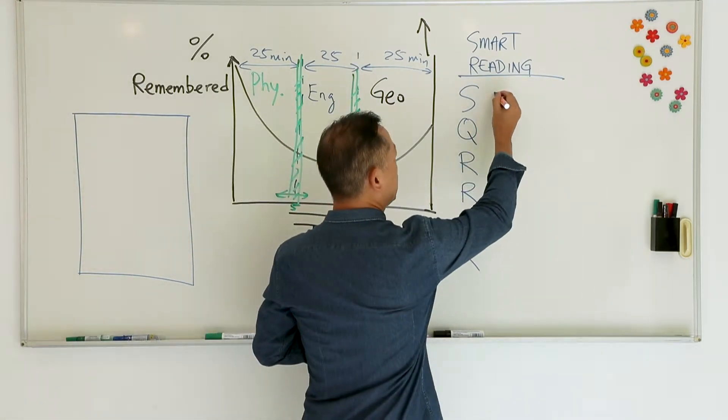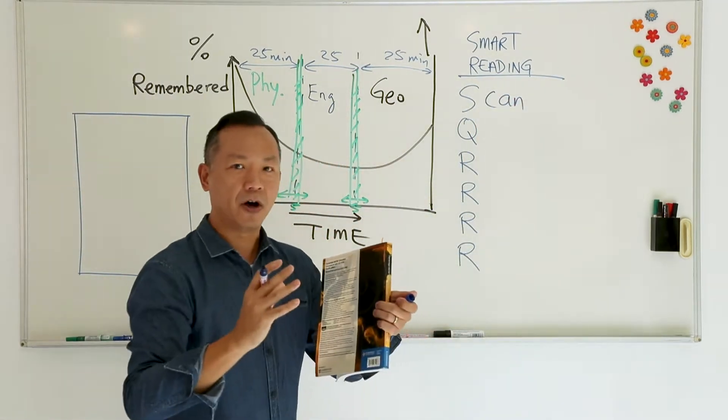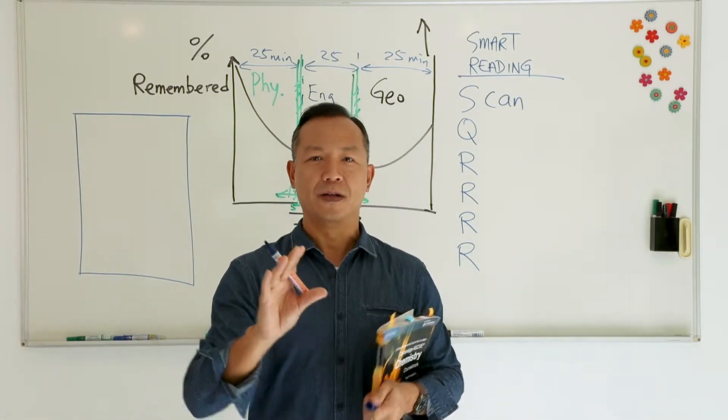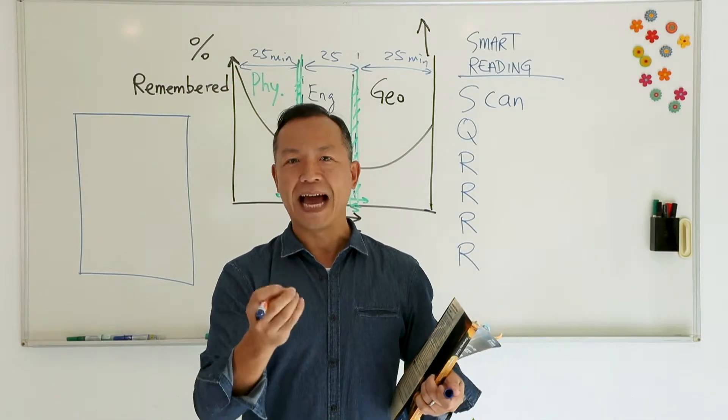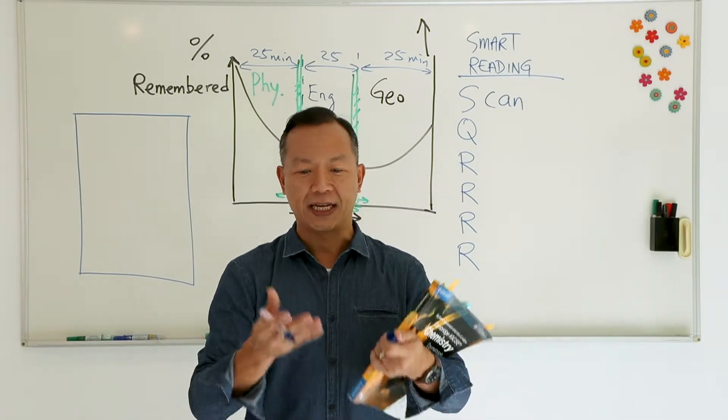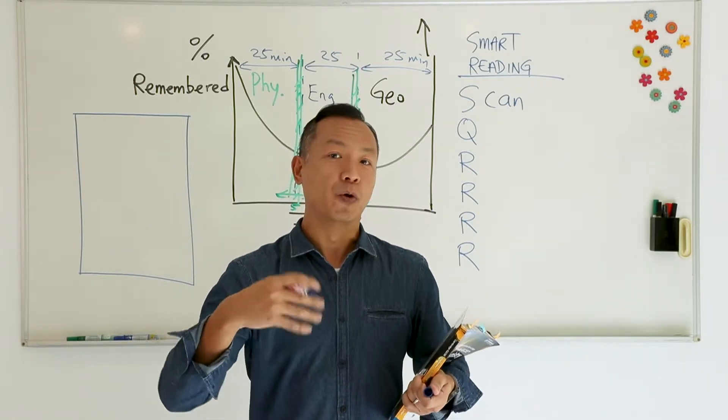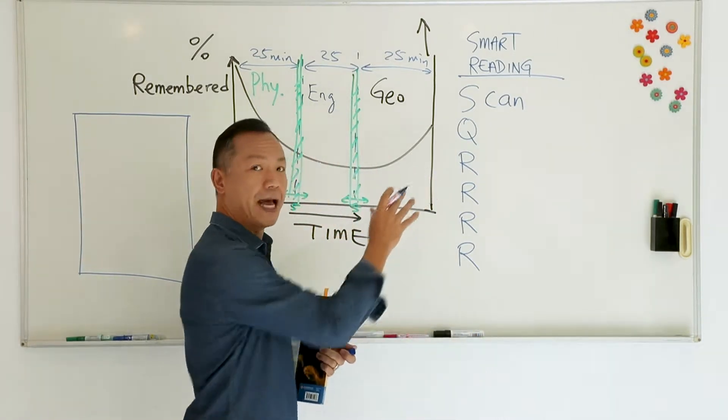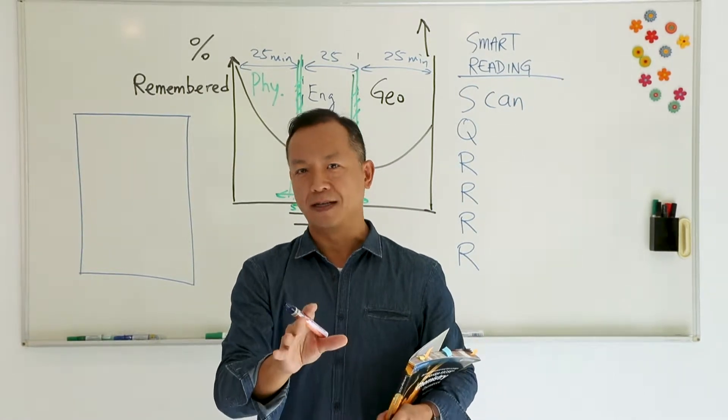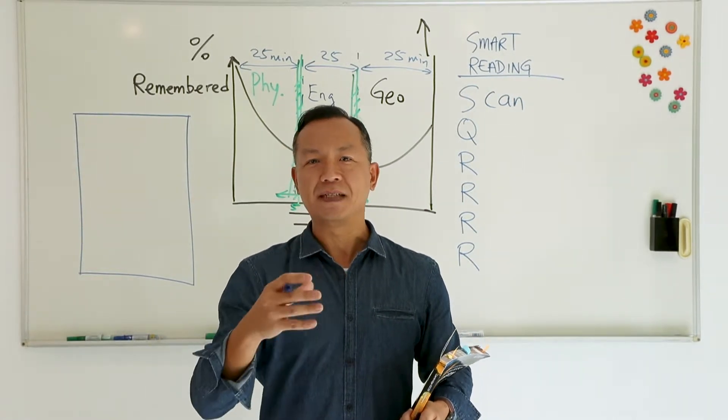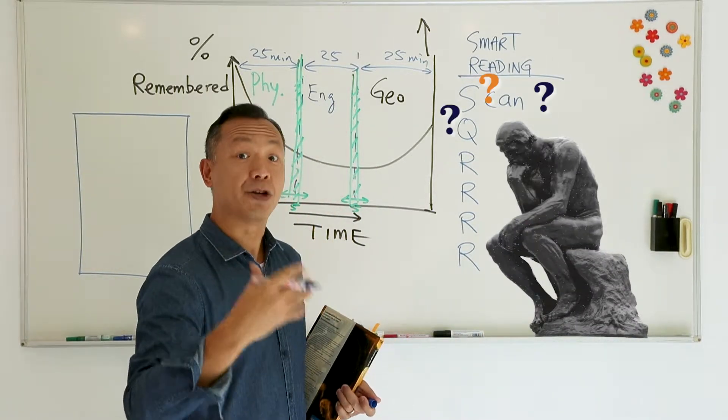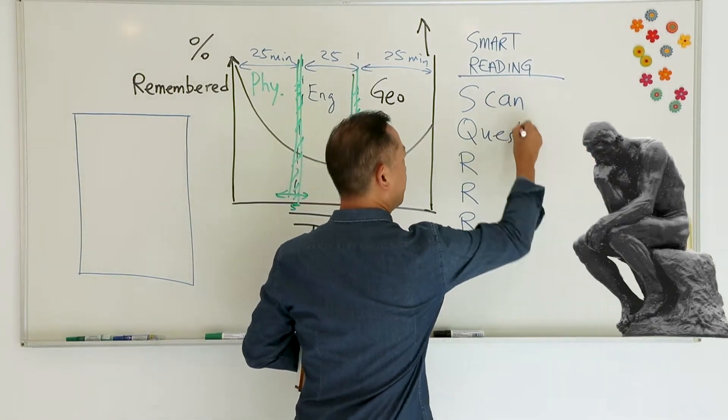First, SQ4R. The first step is S for scan. When we want to study the chapter, we need to be like the eagle flying over the forest, having a bird's eye view of the chapter. It's almost like before you drive to a destination, you want to check on the map how the journey will look like. The second step, very powerful, is the secret of top students - they question. They question more so that they increase their understanding.